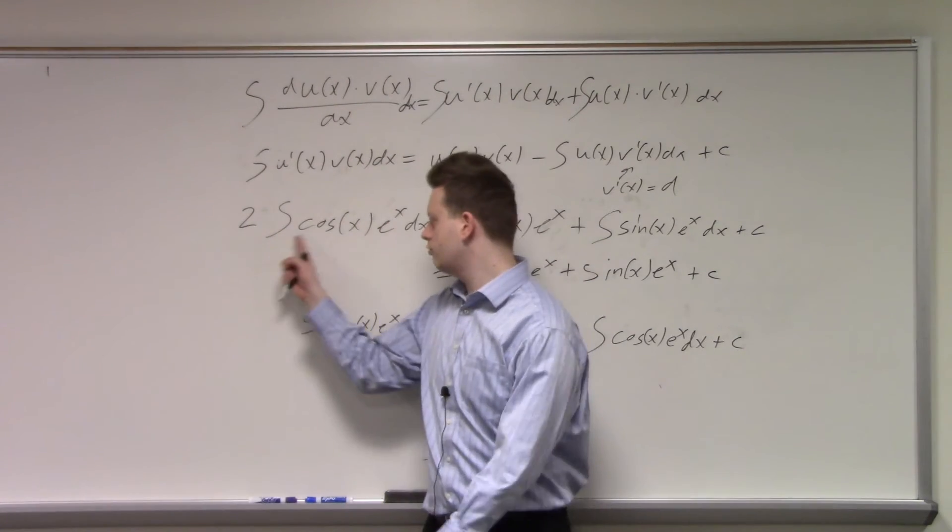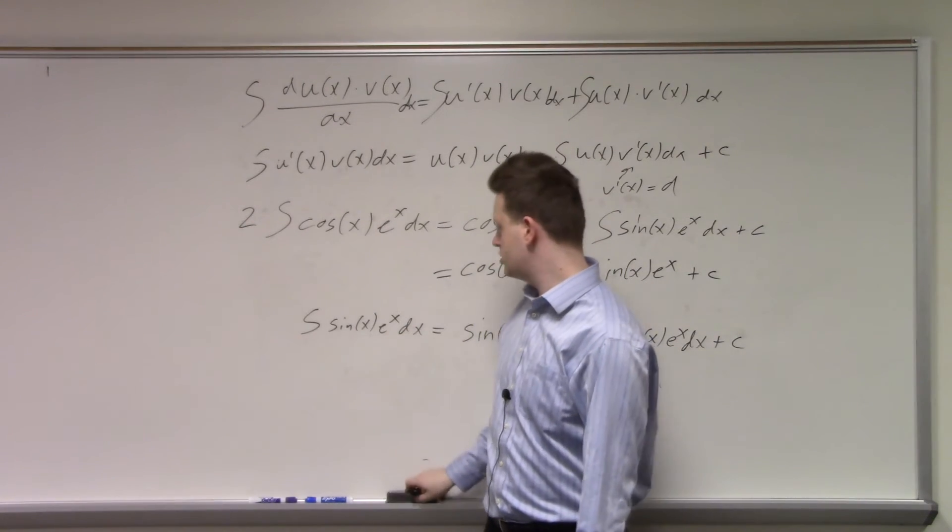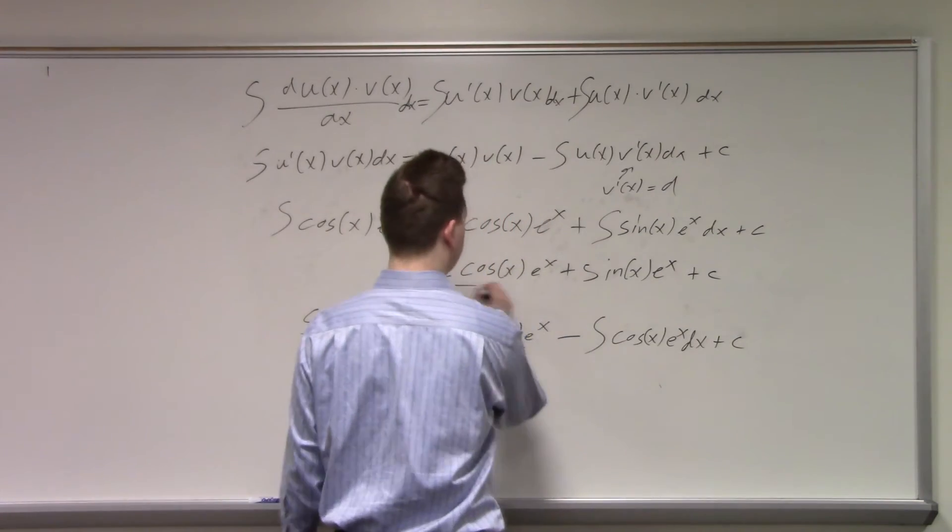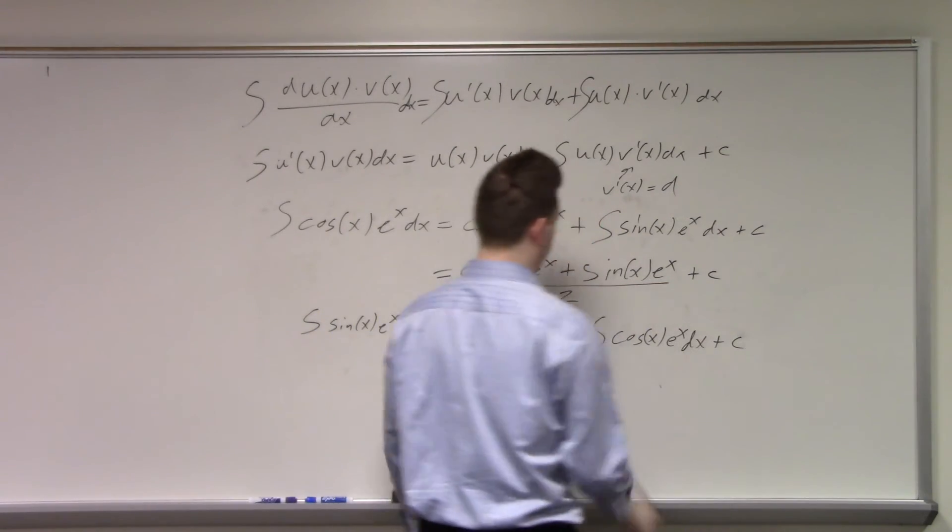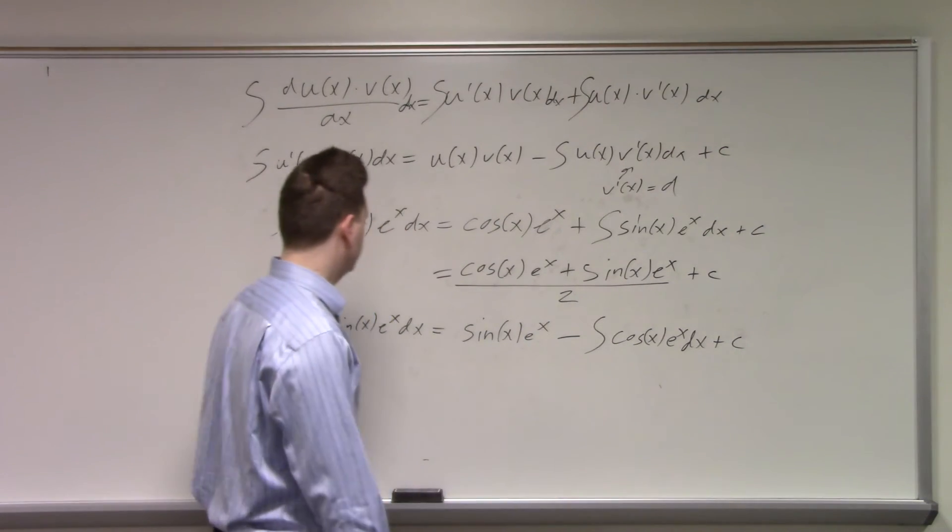But I wanted the integral of cosine(x) e^x, not two times that. Well, let's divide by two both sides. Note, the constant divided by two is still a constant. And we got that.